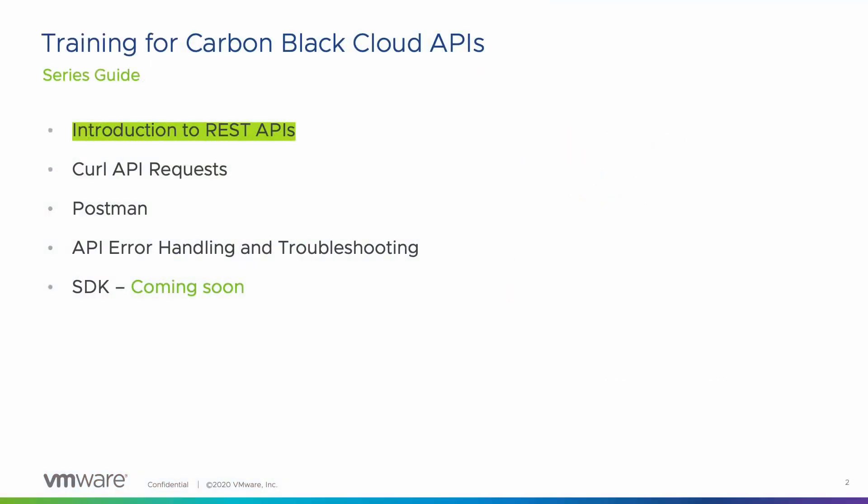This series includes an introduction to REST APIs, calling Carbon Black Cloud APIs using curl requests and Postman, API error handling and troubleshooting, and using the Carbon Black Cloud SDK. This lesson is the first in the series, and it introduces REST APIs, HTTP requests and responses, and API authentication.